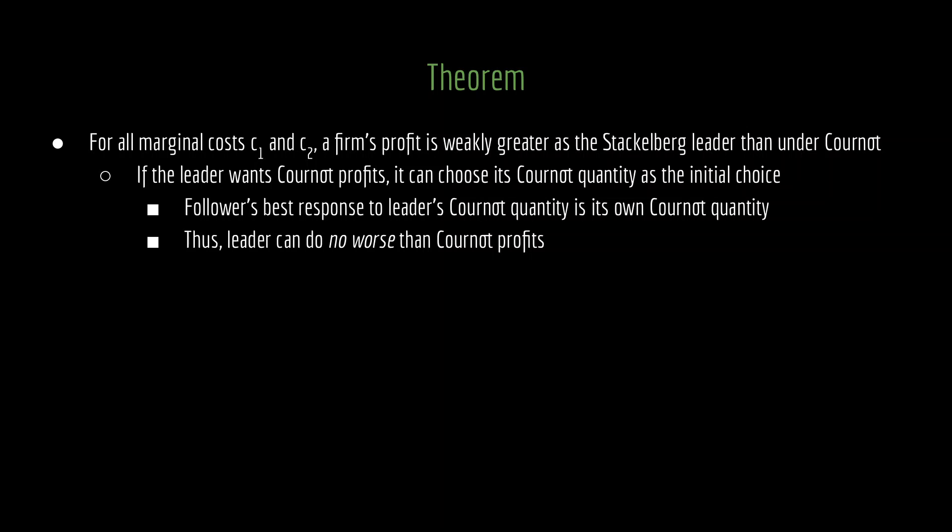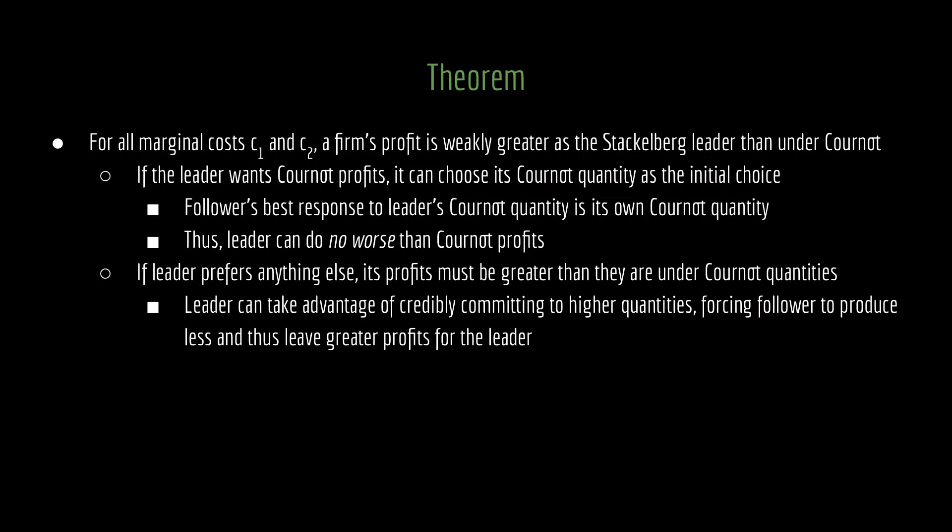So the leader is always capable of acquiring Cournot profits — it can never do any worse than that. But if the leader is preferring anything else, its profits must be greater than under Cournot. If it is actively choosing something other than the Cournot quantity, then it is acquiring more profit. What's happening is that the leader takes advantage of being able to credibly commit to higher quantities, which forces the follower to produce less, and thus leaves greater profits for the leader.